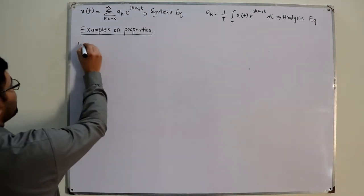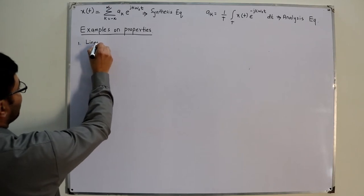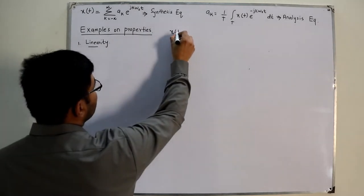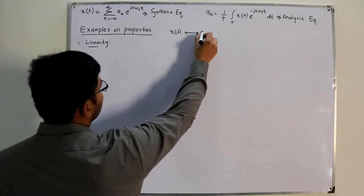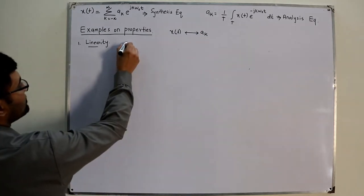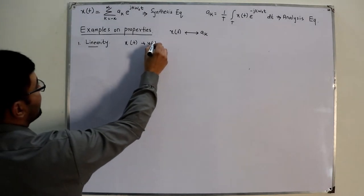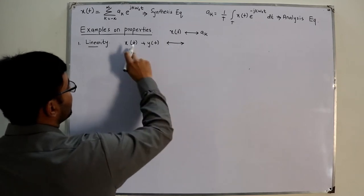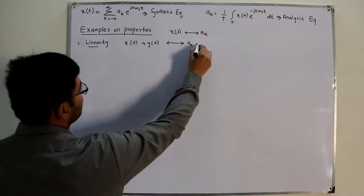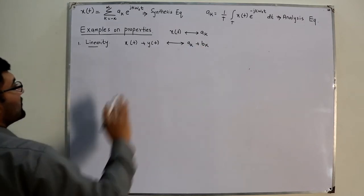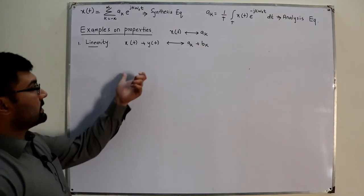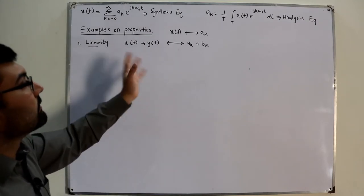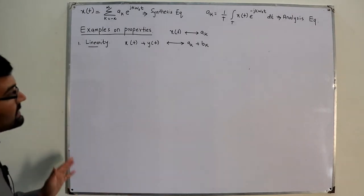The first property we saw was linearity. We assume that if our signal is x(t), its Fourier coefficients are ak. Now if you have any two signals added together, their Fourier coefficients would simply be added together as well. If one has ak and the other bk, you would have ak plus bk — a linear combination. It's not necessary just for addition; you could have subtraction or a multiplication factor as well.